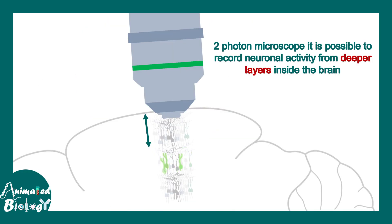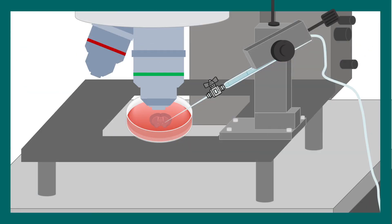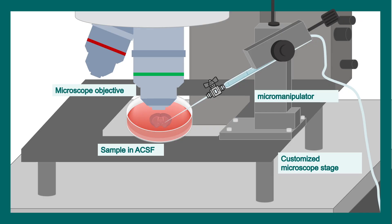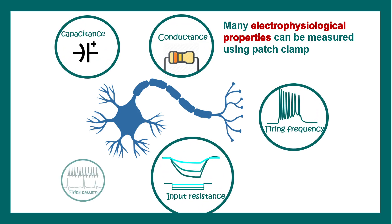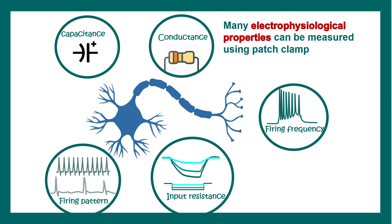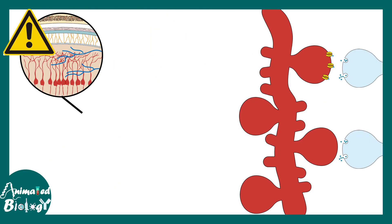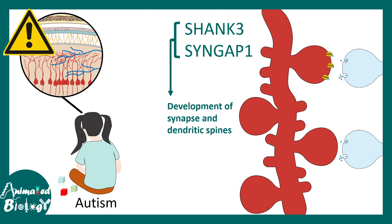A lot of insight has come from these tools. Two-photon microscopy enables deep tissue imaging, and alongside it, patch clamp recording gives more insight into the overall abnormalities of the neuronal circuitry. Parameters like capacitance, conductance, firing frequency, input resistance, and firing pattern can all be assessed using electrophysiological techniques. Using these techniques, scientists found that specific mutations such as Shank3 and Syngap1 are associated with the development of synapses and dendritic spines. When these proteins are mutated, there are alterations in synapse formation or synaptic architecture, leading to neurological complications in autism.